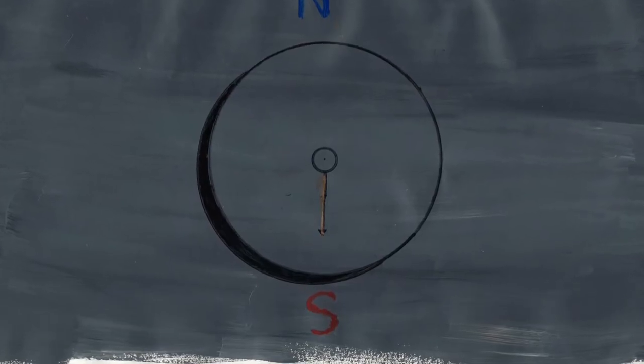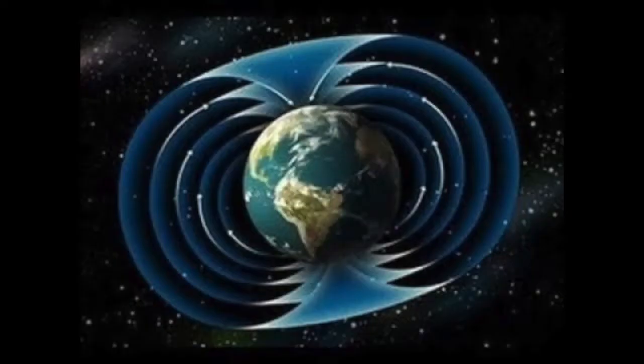The Earth has this balancing field, currently called the electromagnetic field. It comes out of Antarctica and goes back in through the Arctic. Technically, that means Antarctica is the North Pole and the Arctic is the South Pole.